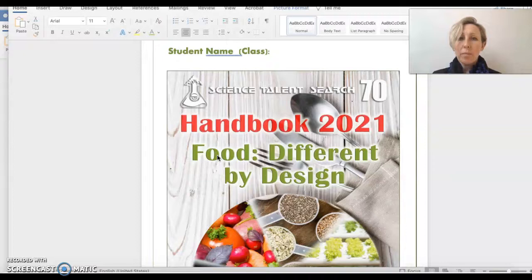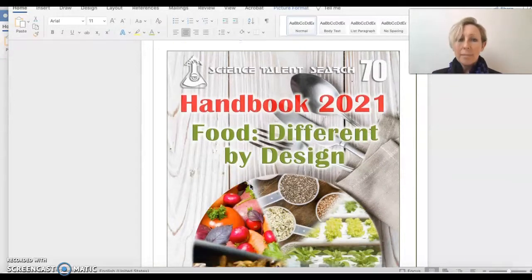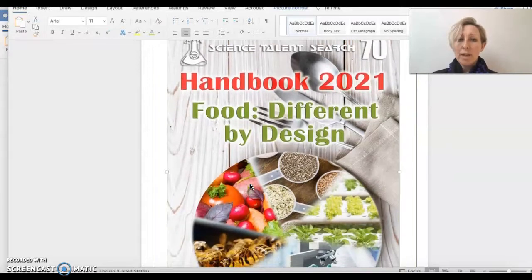Keep in mind that only 24 students from the Year Seven cohort will be selected to actually enter the competition because we are limited on numbers. However, all Year Seven students are doing this project this year as part of the Year Seven course. This year's topic is Food Different by Design.